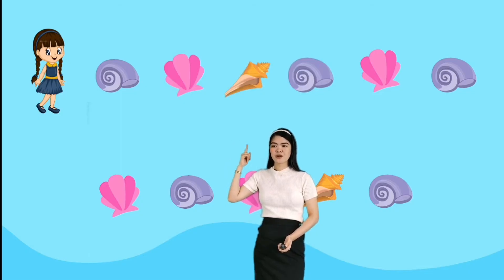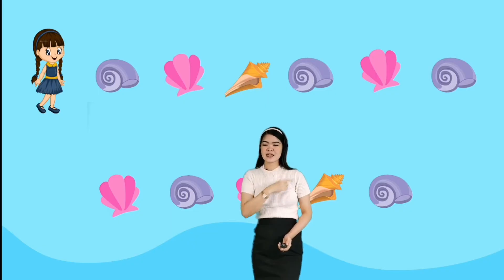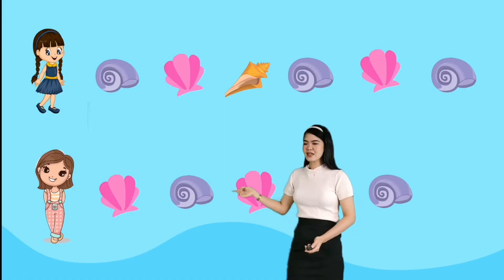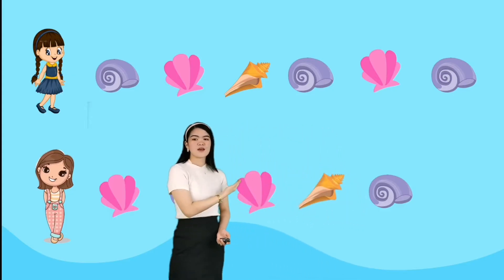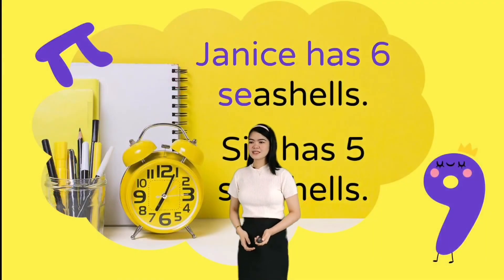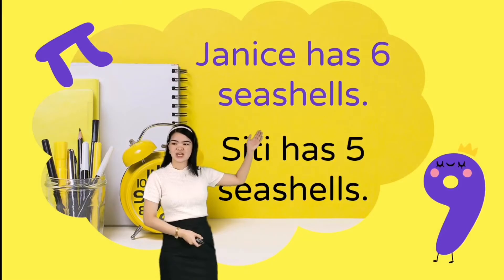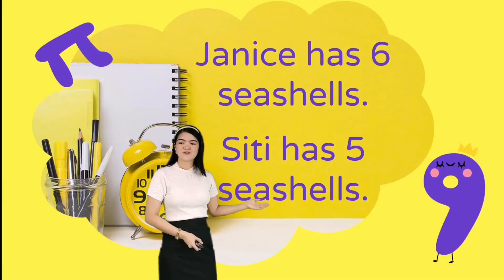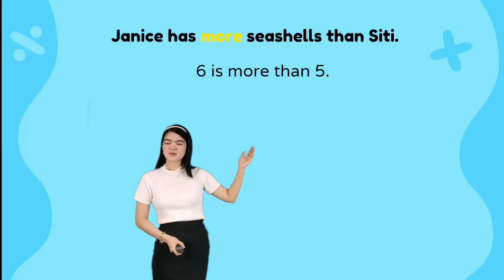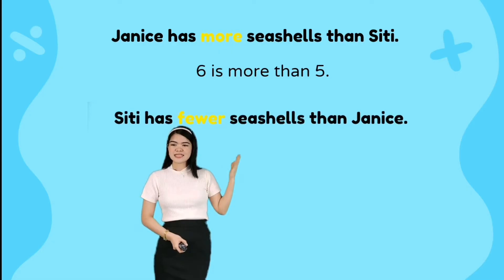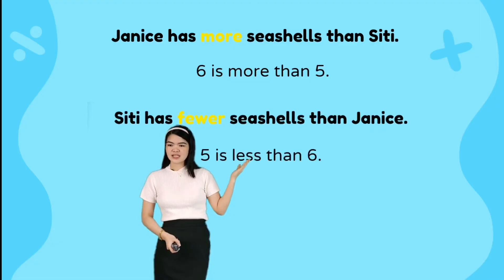On the next day, Janice and Citi collected seashells again. Janice got one, two, three, four, five, and six. Citi got one, two, three, four, and five. Janice has six seashells and Citi has five seashells. Janice has more seashells than Citi, so six is more than five. Citi has fewer seashells than Janice.